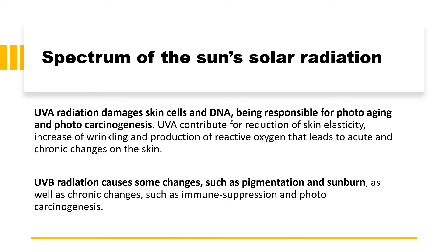Ultraviolet B radiation causes changes such as pigmentation and sunburn, as well as chronic changes such as immunosuppression and photocarcinogenesis. So ultraviolet B radiation is basically concerned with the sunburn and pigmentation effects caused by solar radiation.